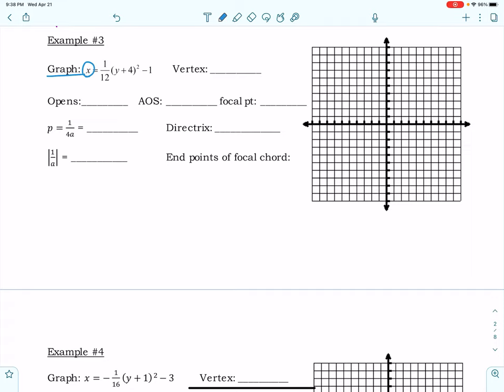That means that we have a situation in which x is equal to a positive a because there's no sign in front of 1/12 and that's going to be y minus k squared plus h.